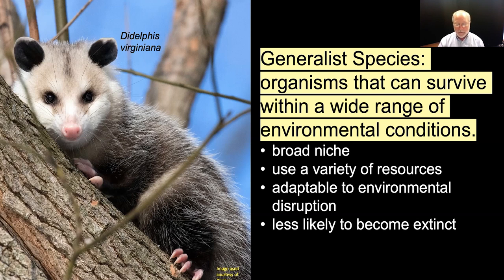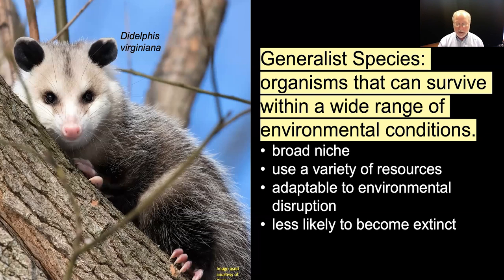The opposite of a specialist species is a generalist species. They are generalists because they have a broad niche — that is, they can survive in a wide range of environmental conditions. They don't require special temperatures, habitats, or food sources. Instead, they can survive in spite of changing environmental conditions. A good example of a generalist organism is the North American opossum. The opossum, like the koala, is a marsupial, but it is the only remaining marsupial on the North American continent, and this is due in large part to the fact that it is a generalist species.